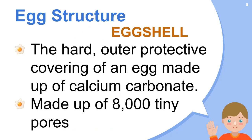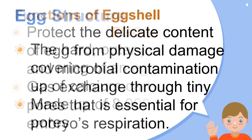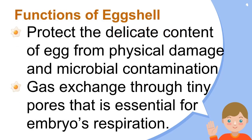The eggshell has various crucial roles and is a structurally important part of a bird's reproductive biology. It represents both a physical and chemical shield that protects the internal content of the egg and is mostly composed of calcium carbonate. Its primary function is to provide protection. The eggshell's hard structure serves as a strong defense against external pollutants and mechanical harm, preventing damage to the delicate yolk and egg white and guarding against microbial invasion.